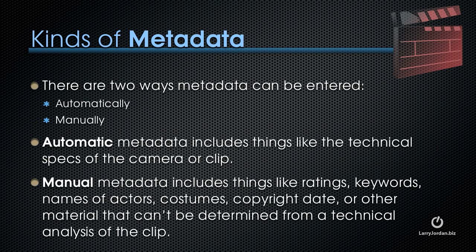There are two ways that metadata can be entered: automatically and manually. Automatic metadata includes things like the technical specs of the camera or clip. Manual metadata includes things like ratings, keywords, names of actors, costumes, copyright date, or other material that can't be determined from a technical analysis of the clip.